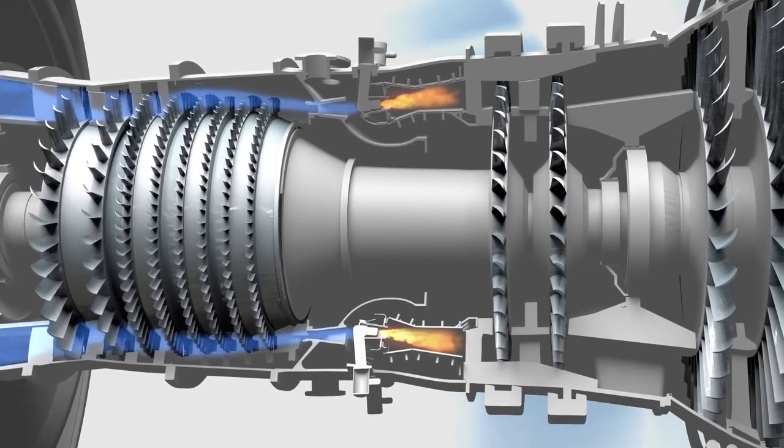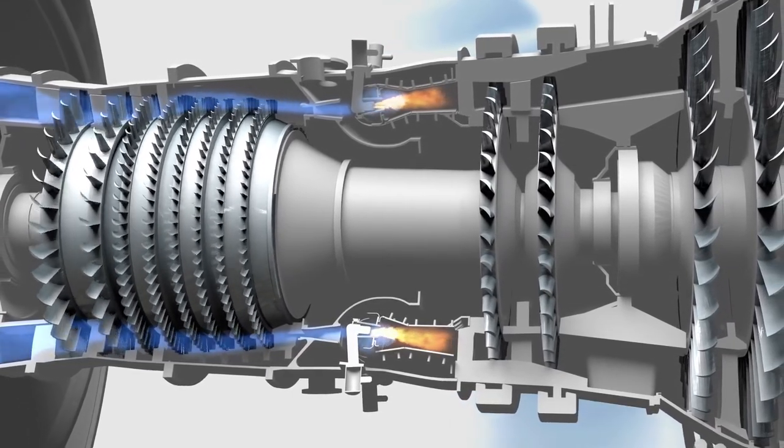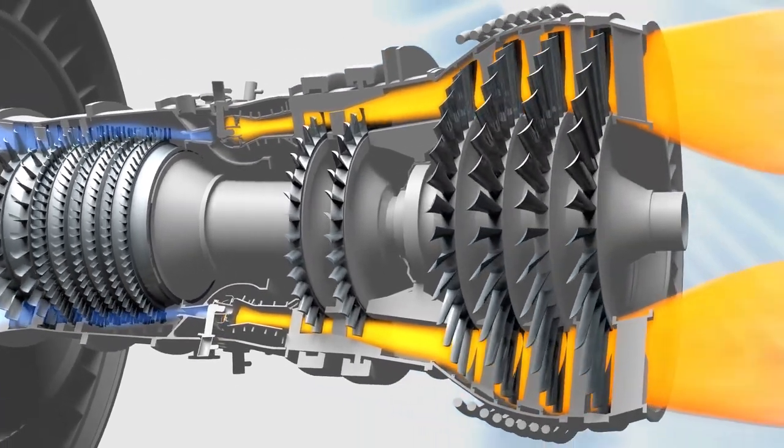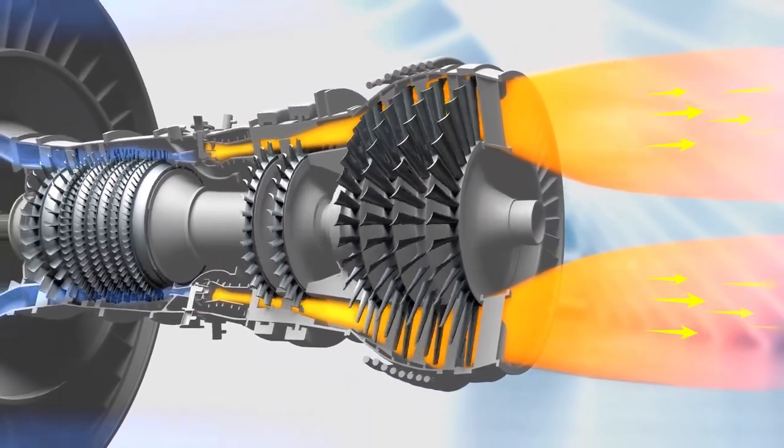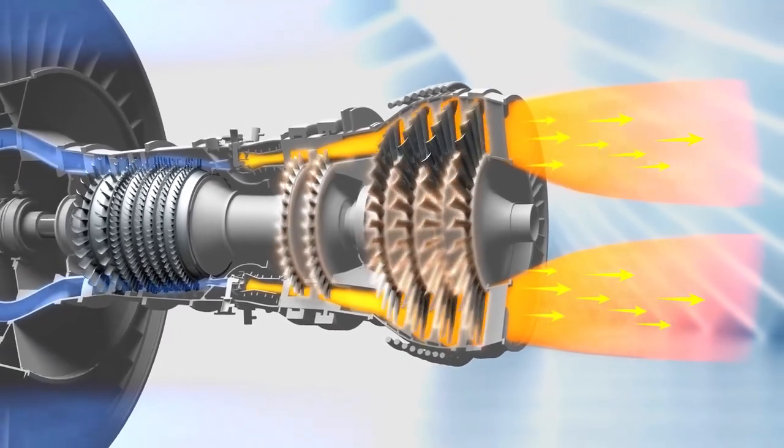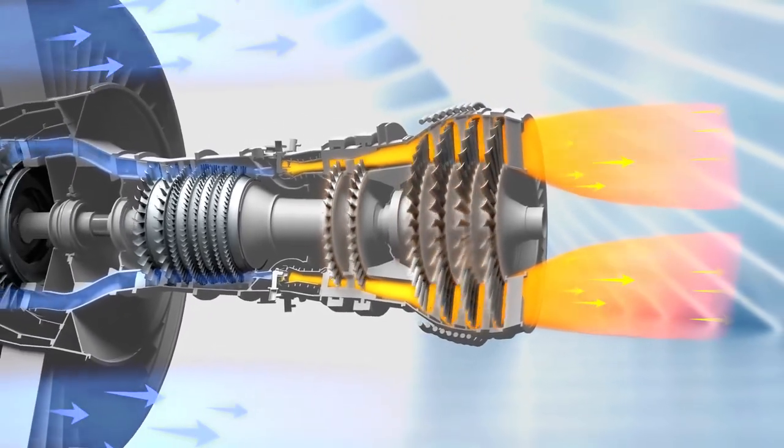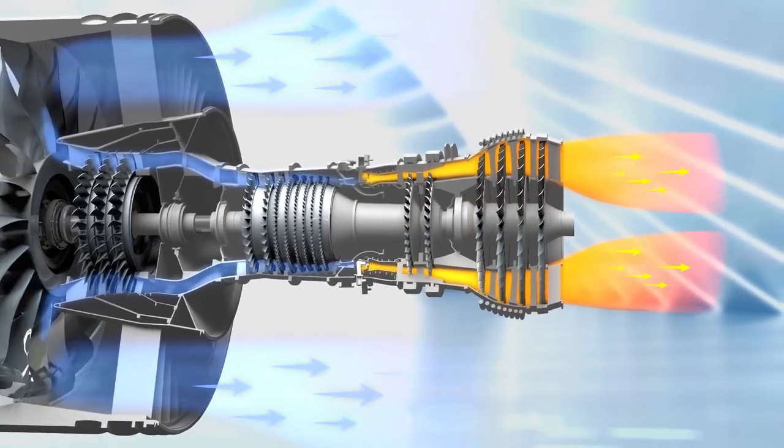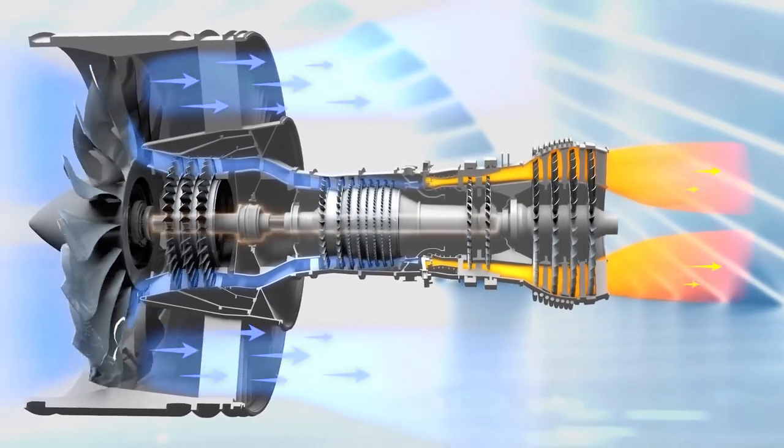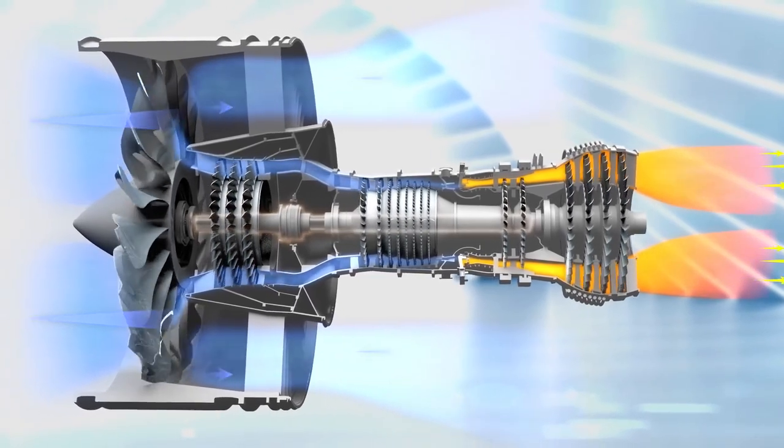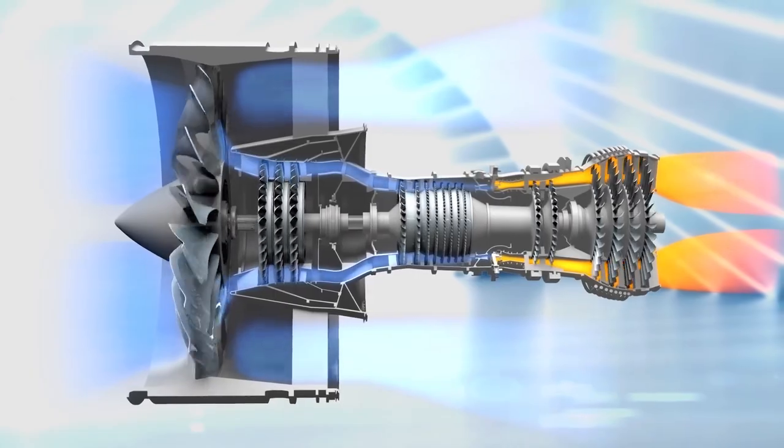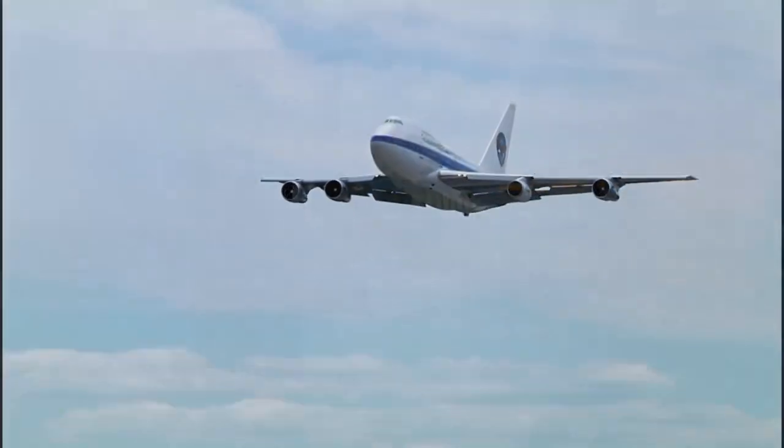In the combustor, that air and fuel mixture meets a flame and shoots out the back of the engine. The rush of hot air spins a turbine. The turbine is like a windmill that scoops up energy from the heated air and spins the shaft connected to the fan at the front of the engine. The excess hot air from the combustor blows out the back of the engine, producing thrust.